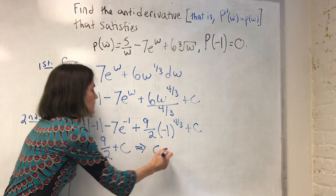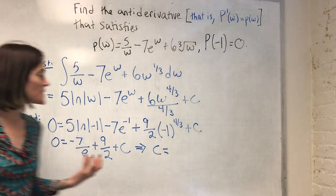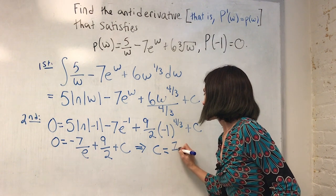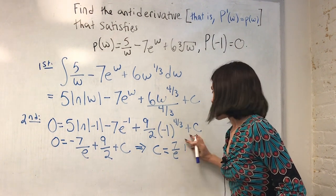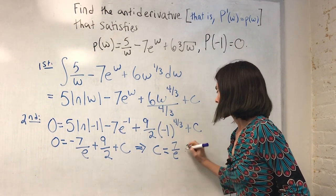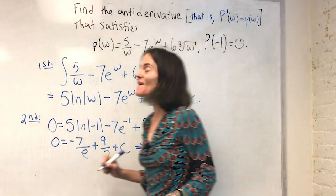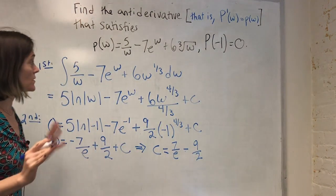c is equal to, just move all of this to the other side, I get seven over e minus nine over two. And now I'm ready for my final answer.